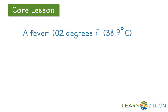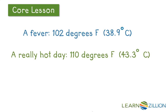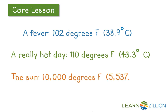Let's look at some hot temperatures. If you're sick and have a fever, your temperature might be 102 degrees Fahrenheit or 38.9 degrees Celsius. If it's a really hot day, it might be 110 degrees Fahrenheit or 43.3 degrees Celsius. If you're on the sun, it would be 10,000 degrees Fahrenheit or 5,537.7 degrees Celsius.